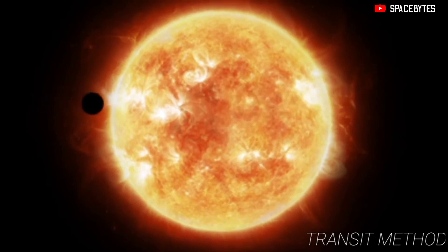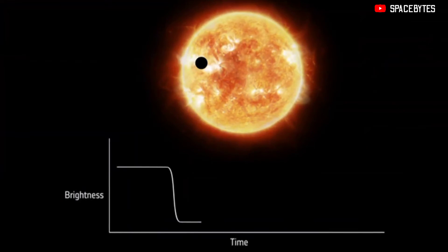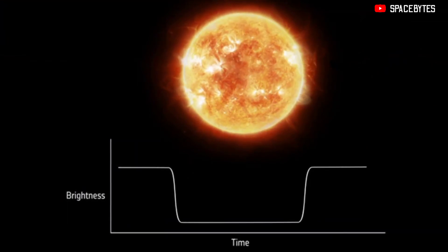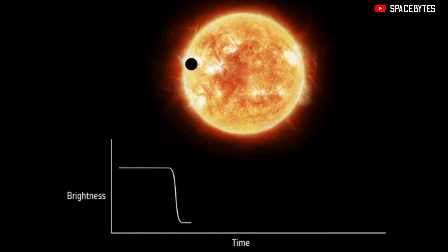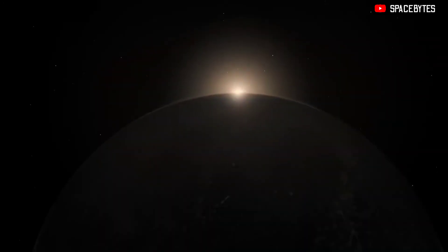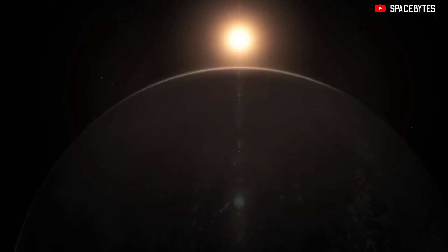When a planet passes in front of its star, it's called a transit. As the planet transits in front of the star, it blocks out a little bit of the star's light, which means the star will look a little less bright. Astronomers can observe how the brightness of the star changes during a transit.